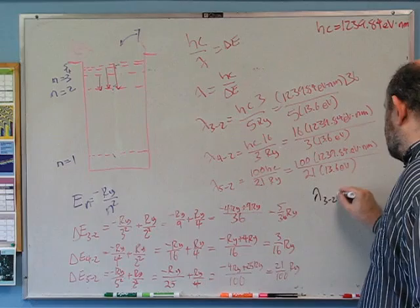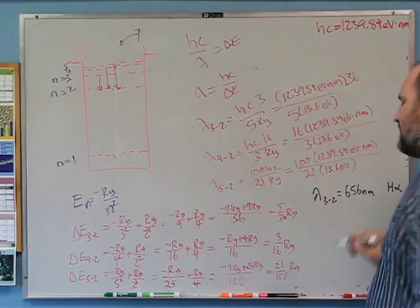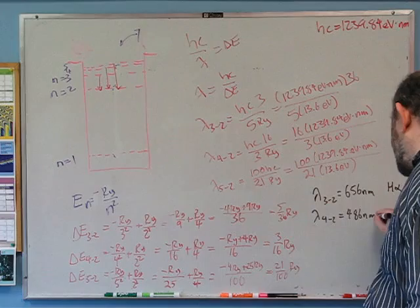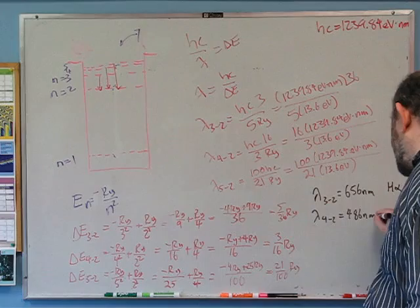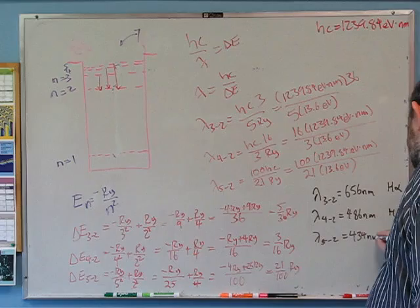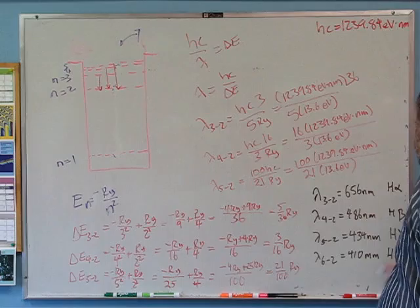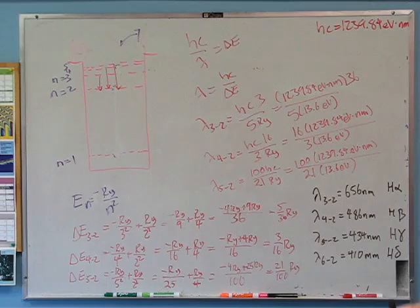Putting it all in my calculator, I get: lambda (3 to 2) equals 656 nanometers — we actually have a name for that wavelength, it's H-alpha, the brightest line seen from hydrogen. Lambda (4 to 2) equals 486 nanometers — H-beta. And lambda (5 to 2) is 434 nanometers — H-gamma. Following the same procedure, lambda (6 to 2) is 410 nanometers — H-delta. And then you're at the lowest one you can see. So these are the optical lines that you can see from hydrogen.